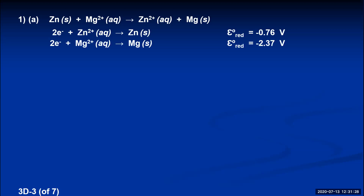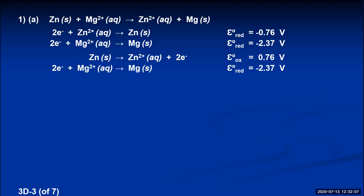To determine if the reaction is spontaneous, you need to reverse one of the reduction reactions to make it an oxidation, so that when you add the reduction and oxidation together, it exactly matches the reaction given. The reaction has magnesium ions as a reactant and magnesium metal as a product, matching the magnesium reduction reaction. But the zinc reaction is written incorrectly — we need zinc metal as a reactant and zinc ion as a product, so we switch the zinc reaction to make it an oxidation. When you reverse the reaction, its sign changes to positive 0.76. Magnesium as a reduction is still negative 2.37, and adding those two gives a voltage of negative 1.61.